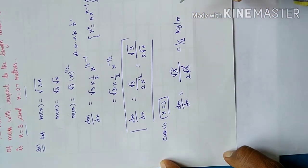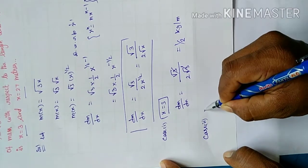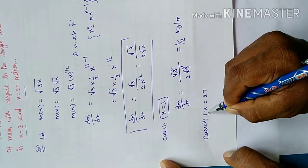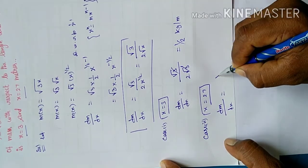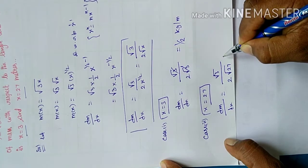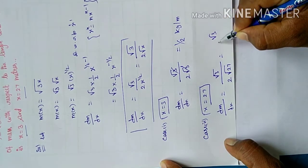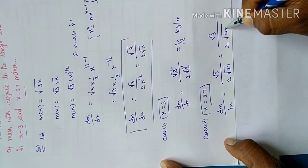Second case, number two, x equal to 27. Apply. dm by dx equal to root 3 by 2 into root 27. Root 3 by 2 into root 27. 27 is 9 times 3, so 3 times root 3.